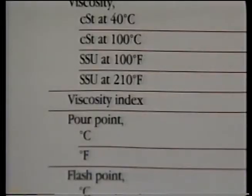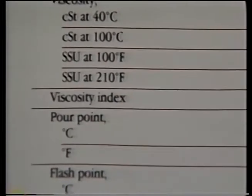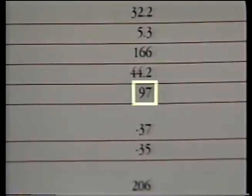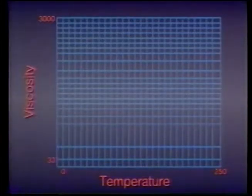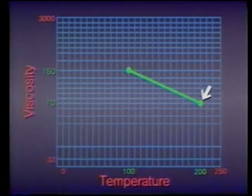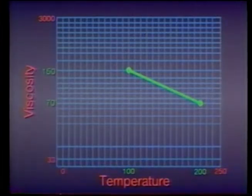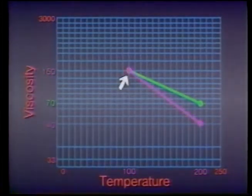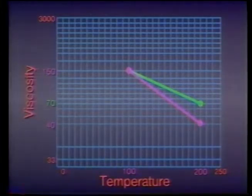The change in a fluid's viscosity at different temperatures is referred to as its viscosity index. The higher a fluid's viscosity index, the less the fluid's thickness is affected by temperature changes. For example, the viscosity of a fluid with a high index may change from 150 SUS to 70 SUS as the temperature rises from 100 to 200 degrees Fahrenheit. But the viscosity of a fluid with a lower index might change from 150 SUS to just 40 SUS over the same temperature range.